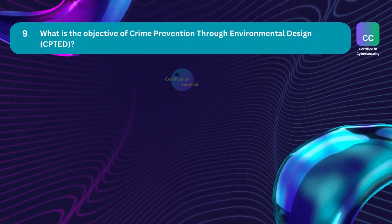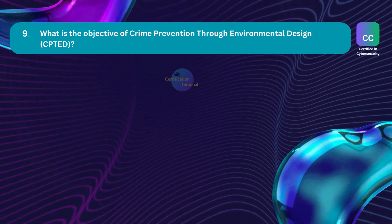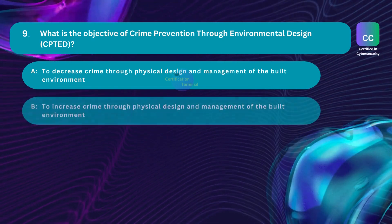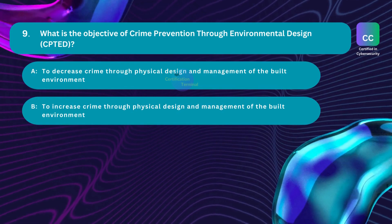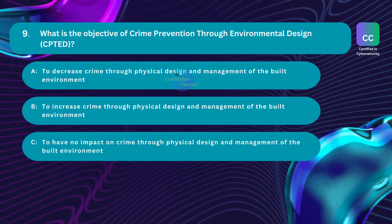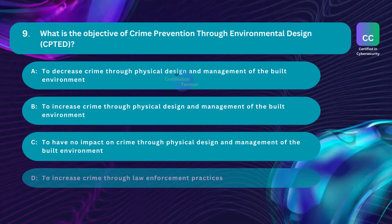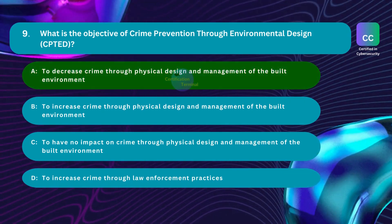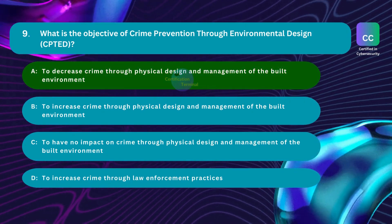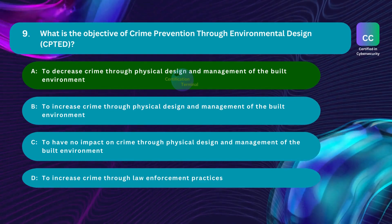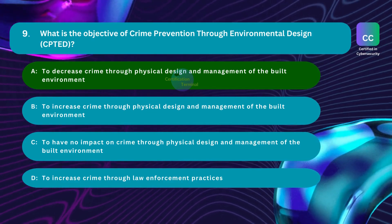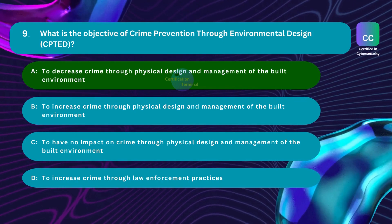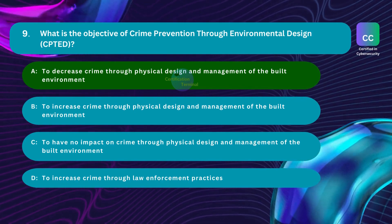Question number 9. What is the objective of crime prevention through environmental design, CPTED? Option A: to decrease crime through physical design and management of the built environment. Option B: to increase crime through physical design and management of the built environment. Option C: to have no impact on crime through physical design. Option D: to increase crime through law enforcement practices. The correct answer is Option A. CPTED is an evidence-based crime prevention strategy that aims to reduce crime through design and management of the built environment, increasing natural surveillance, reducing opportunities for crime, and creating community ownership.